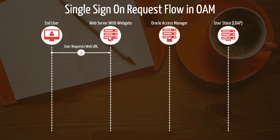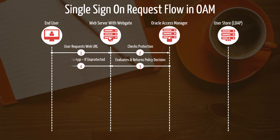First, the end user requests a web resource using a web server URL, and the request reaches the web server — in my case, Oracle HTTP Server. The WebGate installed on the web server intercepts the incoming HTTP request and sends it to Oracle Access Manager for processing. OAM first checks if a session is already present. If it's present, it checks if the session is still valid based on the session timeout settings. If the session is not present, it checks the policies for the requested resource and determines if it's protected or not. If it's not protected, WebGate will serve the requested page without asking for any credentials.